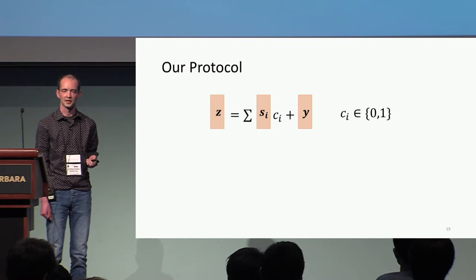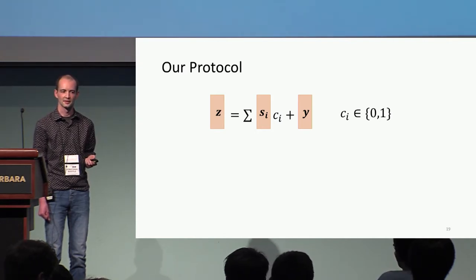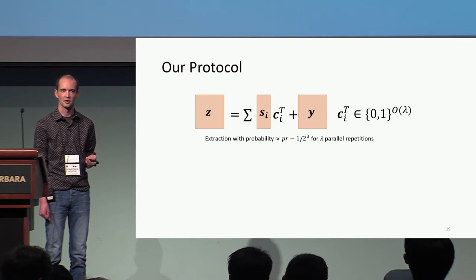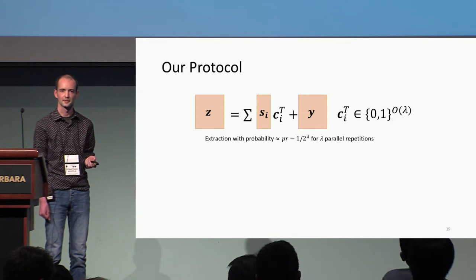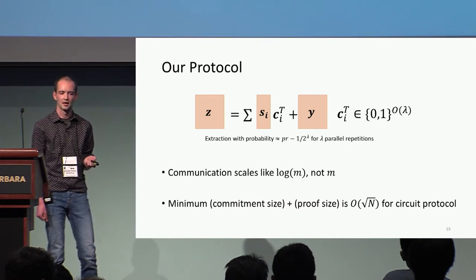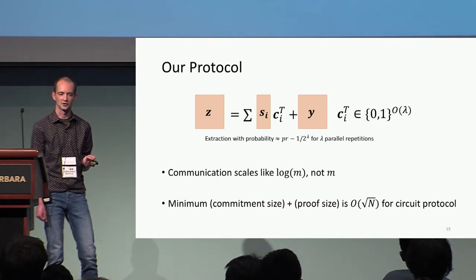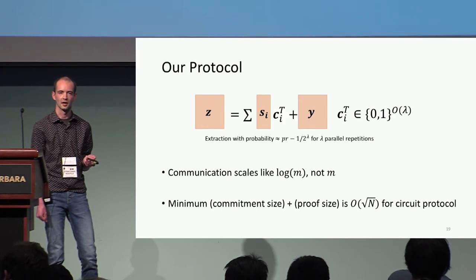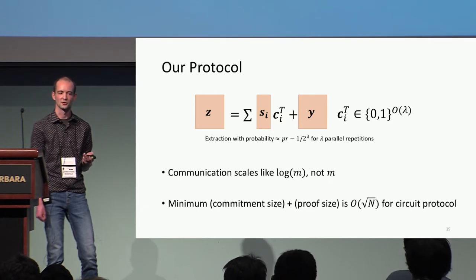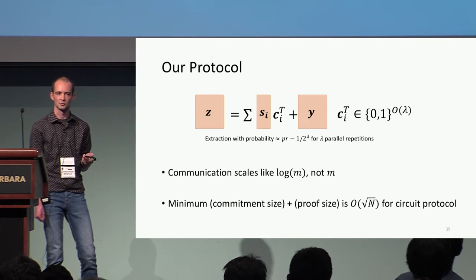That approach doesn't lead to very good soundness — we get a terrible soundness error. The simple way around this is to repeat the protocol about a security parameter number of times, meaning we use random challenge vectors of length about λ instead of random challenge bits. When we measure the communication cost of the protocol against the number of preimages being proven, the communication cost scales logarithmically in the number of preimages rather than linearly — a big advantage over previous protocols. When used as a component of our arithmetic circuit argument, the entire zero-knowledge proof of knowledge costs about O(√N).